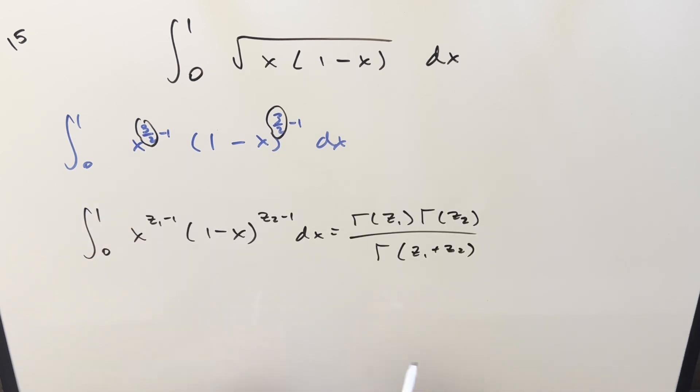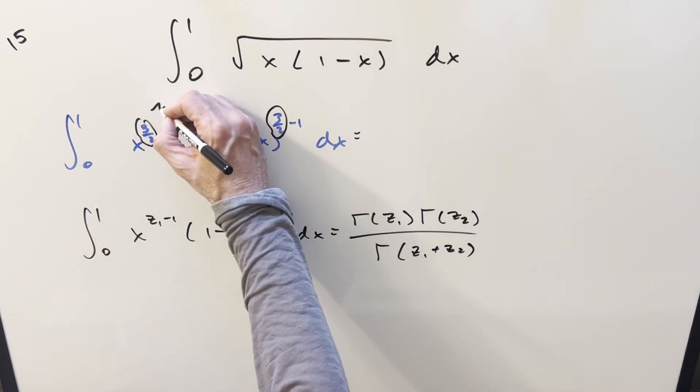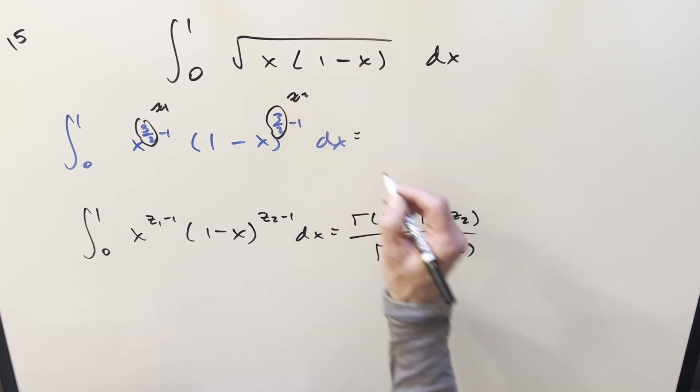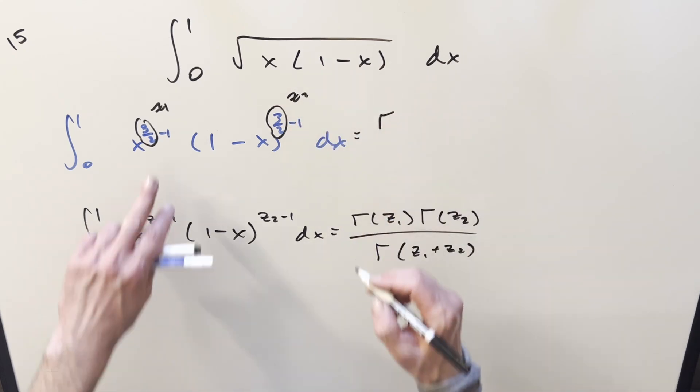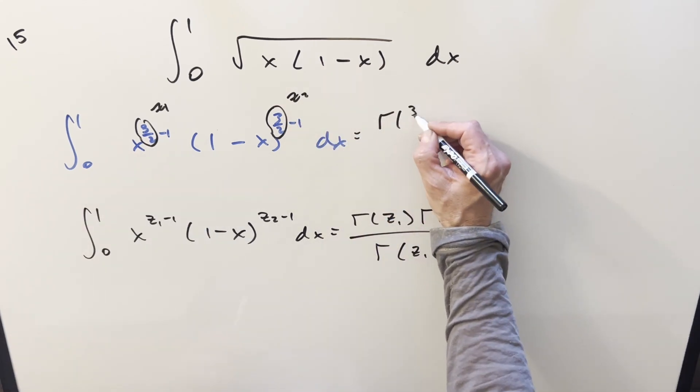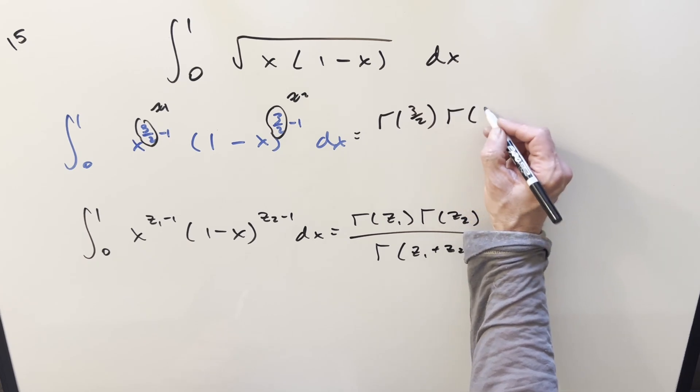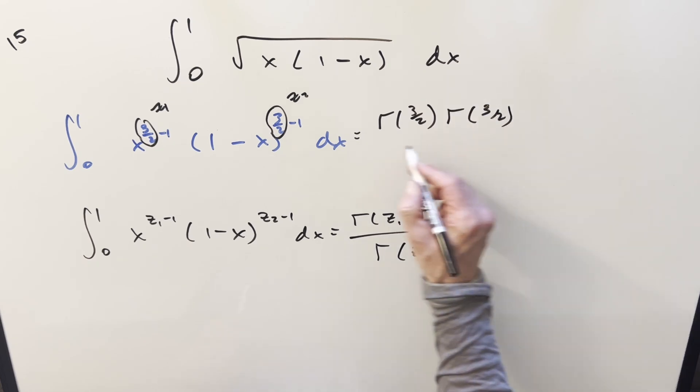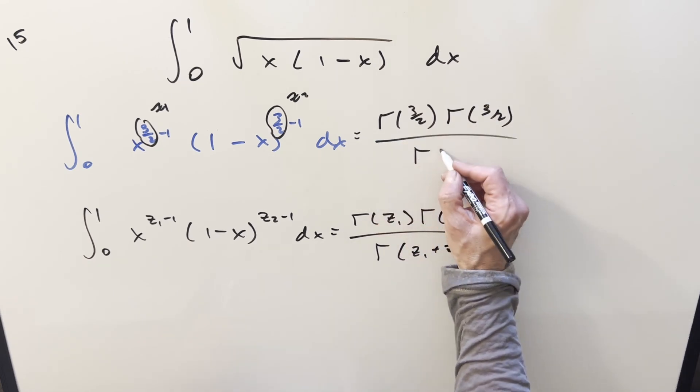So using this, we have everything we need. We've got our z1 and our z2 here and here. So what we're left with is going to be this thing, gamma 3 halves times gamma 3 halves, and then we just need to add them and get gamma 3.